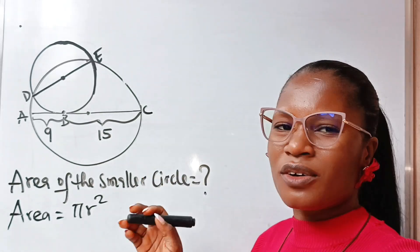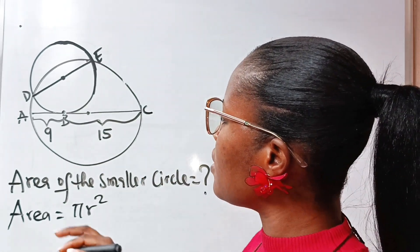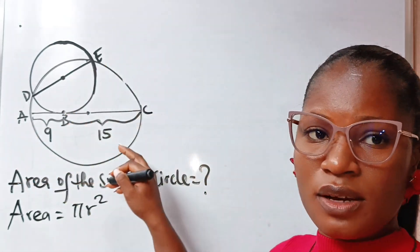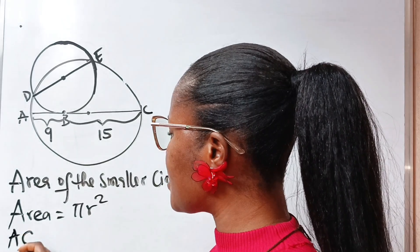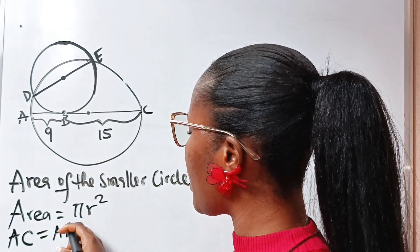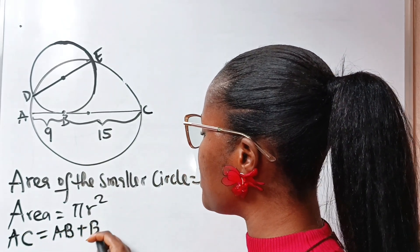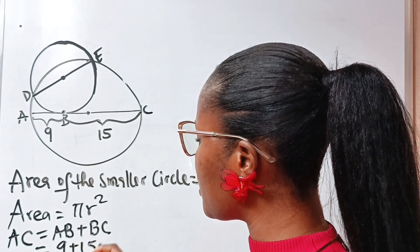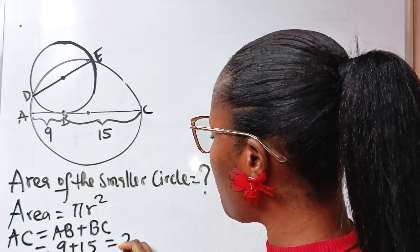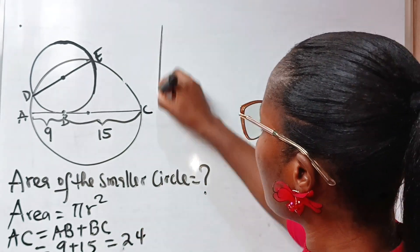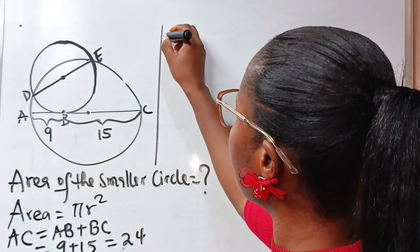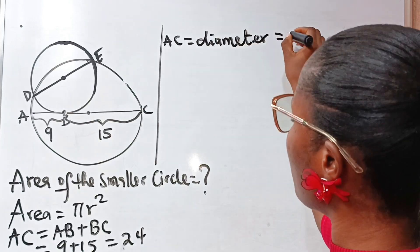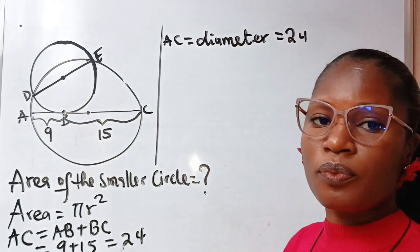Let us read the mind of the examiner first. We are given the length from A to C, which happens to be the diameter of this bigger circle. A to C is equal to AB plus BC, which is equal to 9 plus 15, which equals 24. So the diameter of the bigger circle is 24.